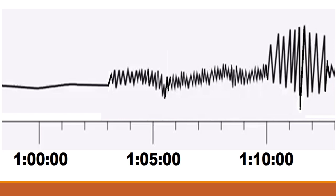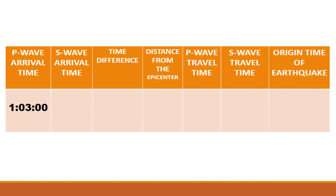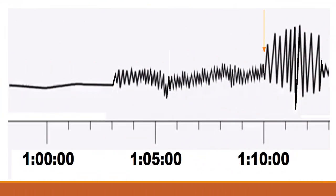Note that the first jump of the line marks the arrival of P-wave, and by following the time scale below, P-wave arrives at 1:03. The second jump of the line marks the arrival of S-wave, and by simply following the time scale below, S-wave arrives at 1:10.